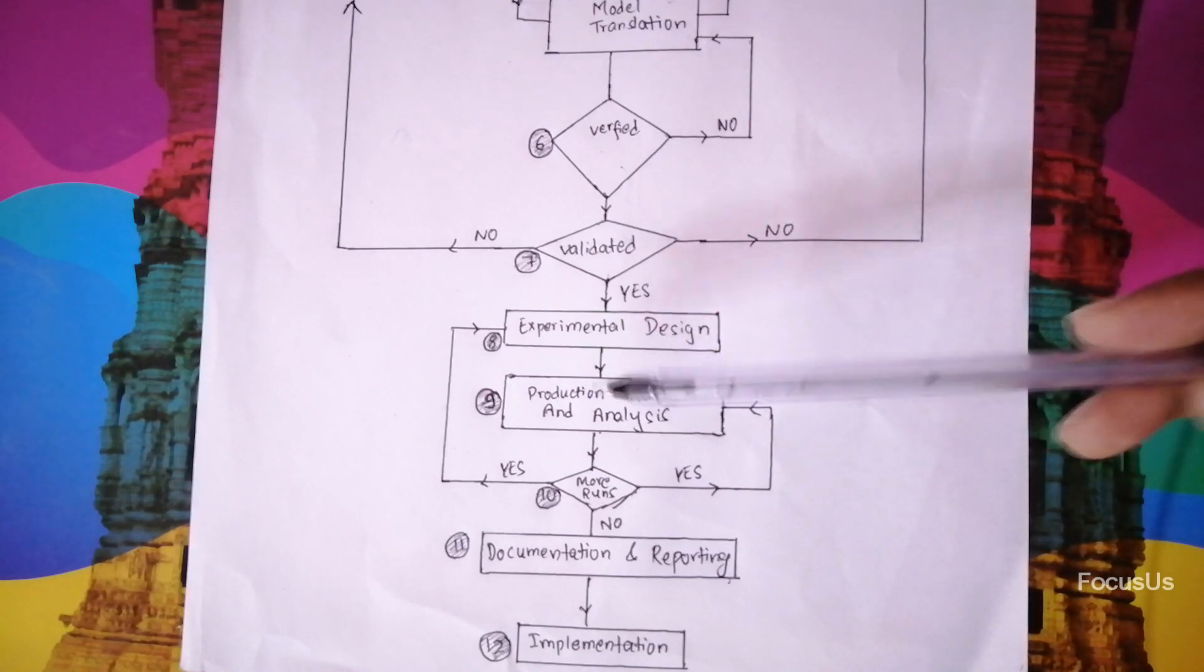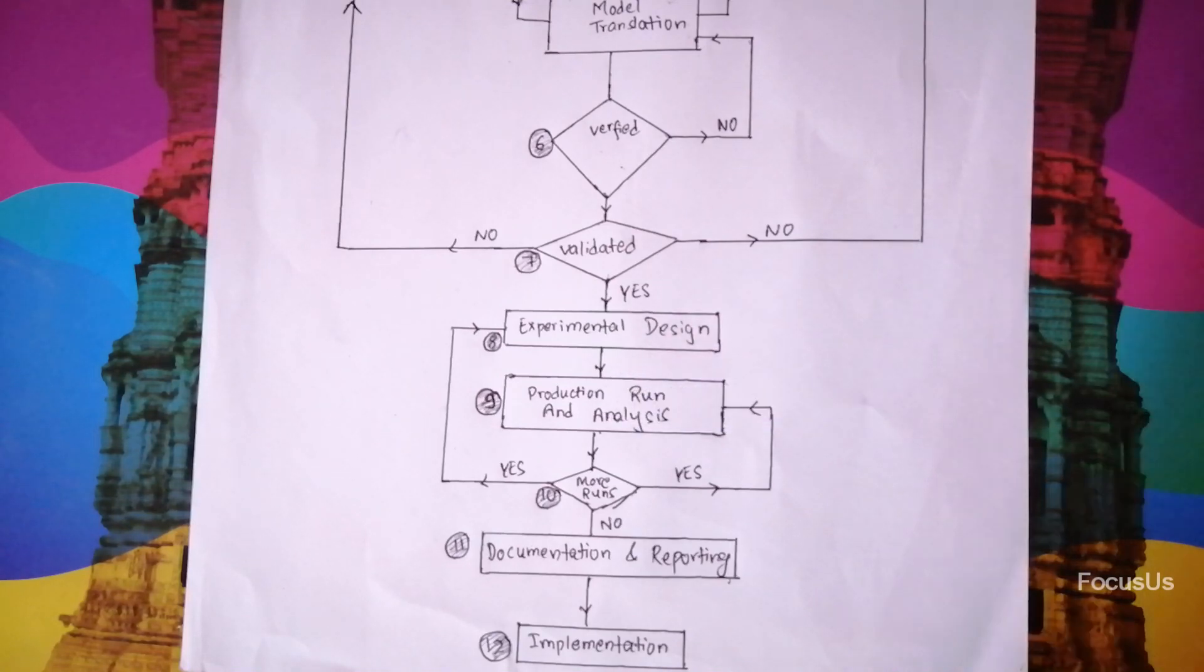Now after doing that we go to our ninth point which is production run and analysis. Here we run the model keeping the real data and we analyze how well the model is doing.